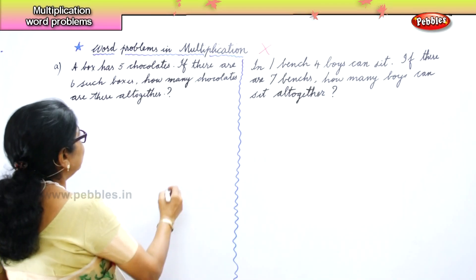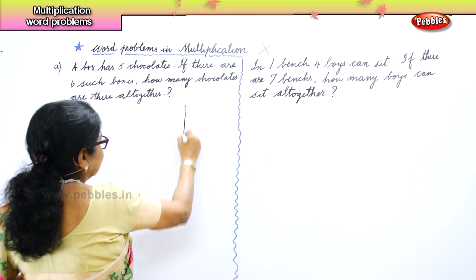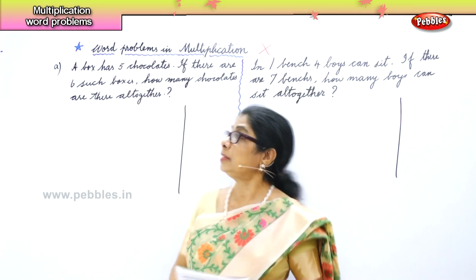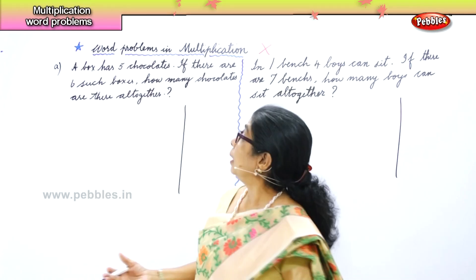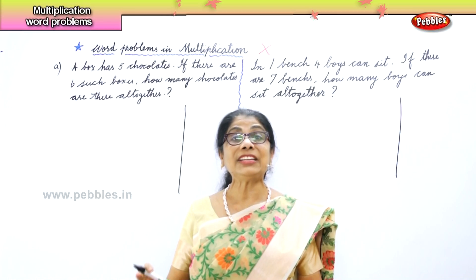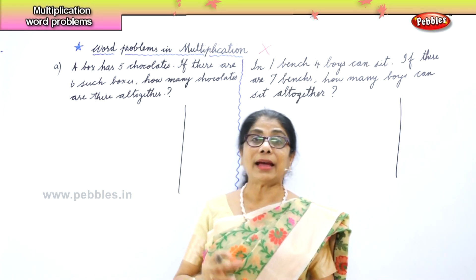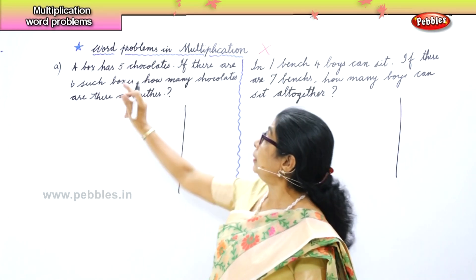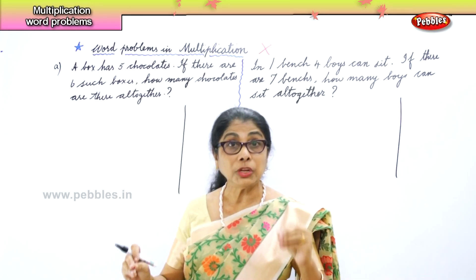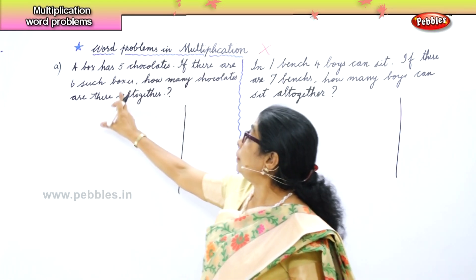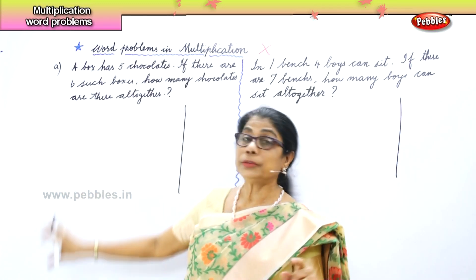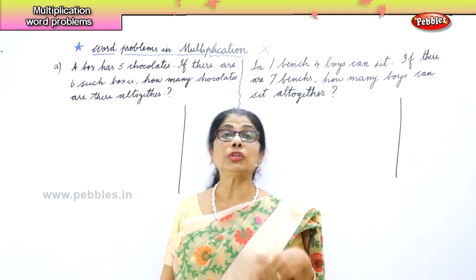First thing we need to do is make the margin and then we start. Now let's read the first problem: a box has five chocolates; if there are six such boxes, how many chocolates are there all together? The first statement is: number of chocolates in one box. Then: number of boxes — six.